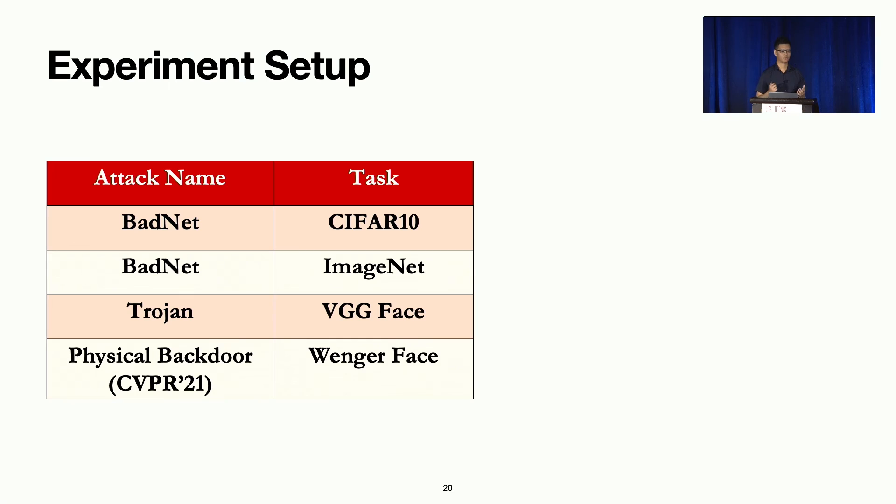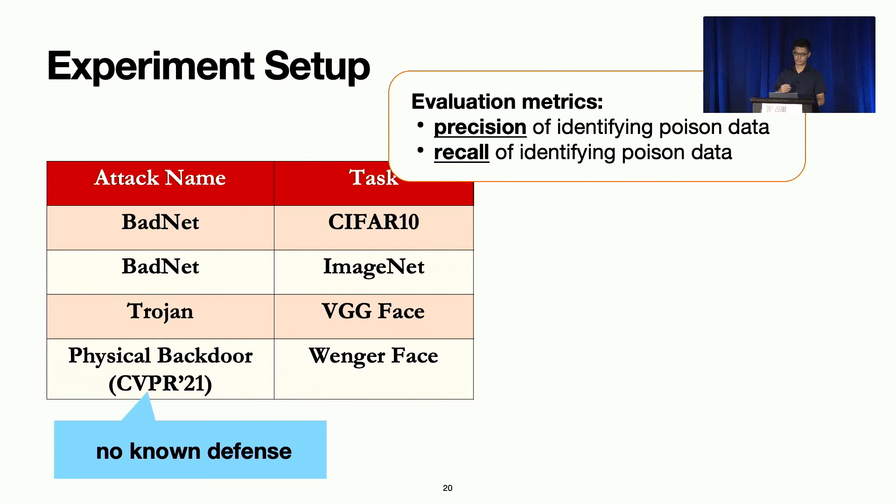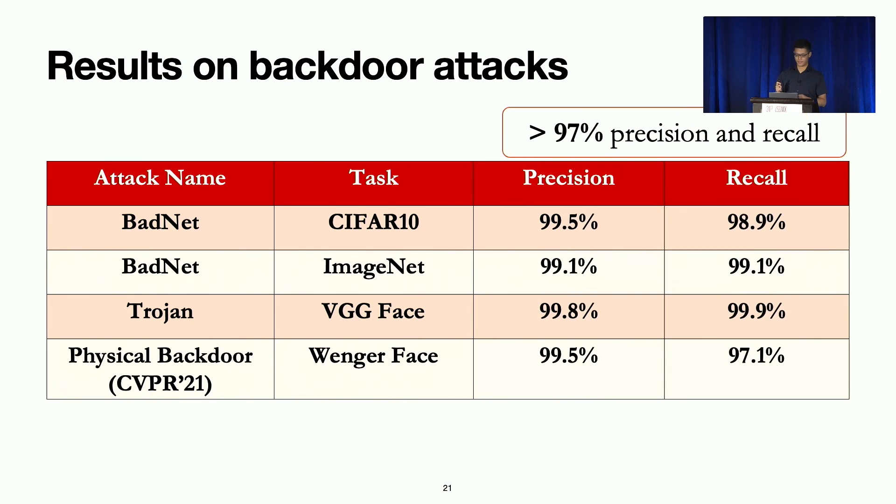We tested against three types of backdoor attacks, including the physical backdoor attack that does not have a known defense at this moment. To evaluate our system, we used the simple precision and recall of the poison data we identified when compared to the ground truth poison data. And it performed really well on backdoor attacks. We can achieve above 97% on precision and recall at tracing back these poison data.